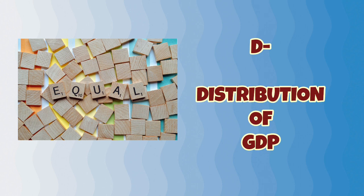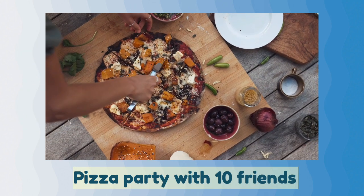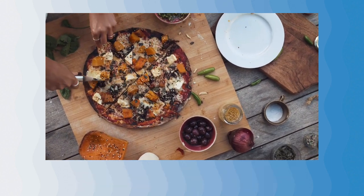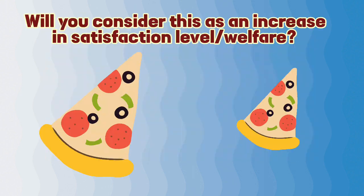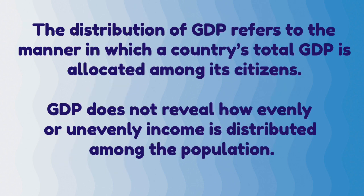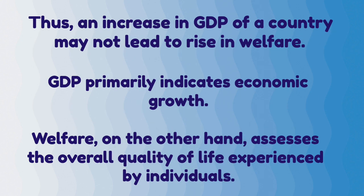D in DIRECT stands for distribution of GDP. Consider a pizza party with 10 friends — each expects an equal piece. If you get a smaller piece, your level of satisfaction will be lower than the others. Likewise, the distribution of GDP refers to the manner in which a country's total GDP is allocated among its citizens. GDP does not reveal how evenly or unevenly income is distributed among the population. Thus, an increase in GDP may not lead to a rise in welfare. GDP primarily indicates economic growth, while welfare assesses the overall quality of life experienced by individuals.